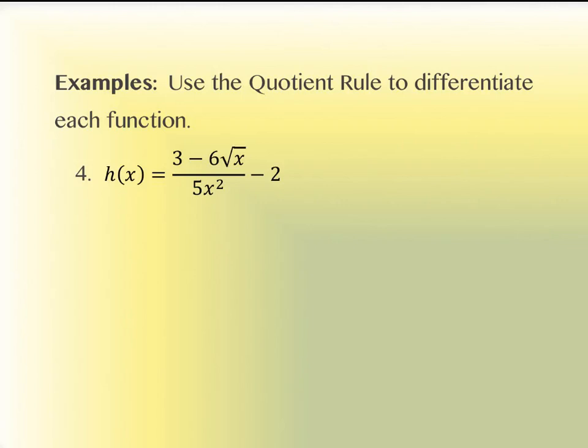Here's another example. The numerator is 3 − 6√x and the denominator is 5x². There's also a minus 2 at the end. We clearly have a quotient rule because we have a quotient. We also have the derivative of the minus 2 at the end — but the derivative of a constant is 0, so we can virtually ignore the minus 2. All we really need to do is the quotient rule.